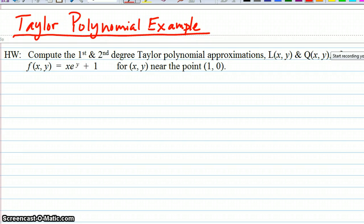I wanted to go through this example that you worked as homework of another Taylor polynomial approximation, or a pair of approximations to a function of two variables. In this example we're going to look at f(x,y) equals x times e to the y plus 1 for ordered pairs near the point (1,0). So this is the point we're expanding about, this will be our a comma b.